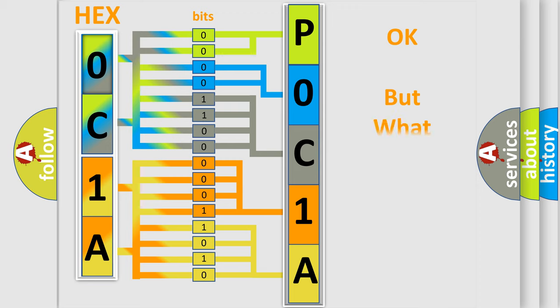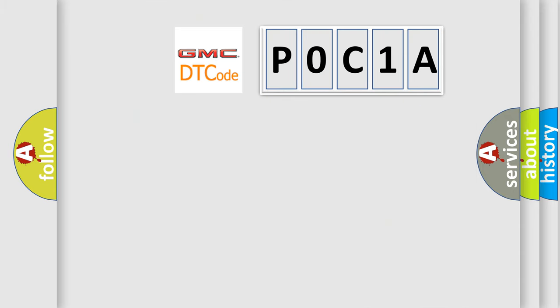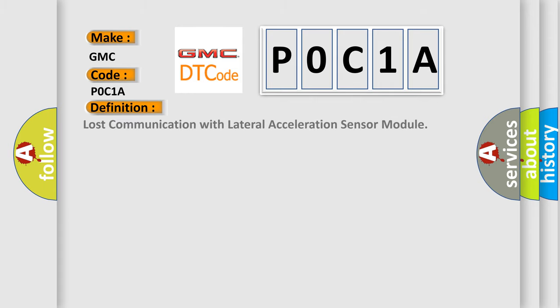We now know how the diagnostic tool translates the received information into a more comprehensible format. The number itself does not make sense to us if we cannot assign information about what it actually expresses. So, what does the Diagnostic Trouble Code P0C1A interpret specifically for GMC car manufacturers? The basic definition is: Lost communication with lateral acceleration sensor module.